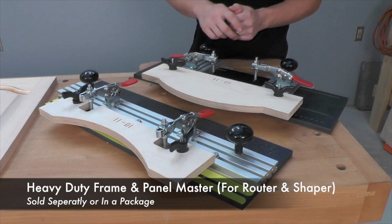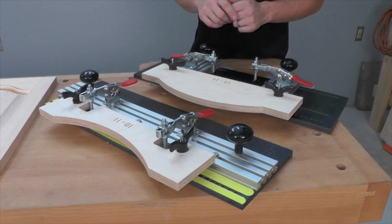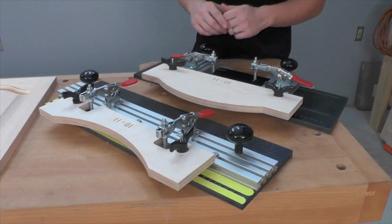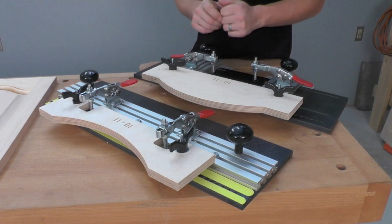This is the heavy duty frame and panel master and as you can see you get two different jigs with this setup: one for holding the rail specifically and one for holding the panel specifically so you don't have to switch back and forth with your jig. You can also have two people using this setup at the same time, which is great in a production environment. The jigs themselves are a heavy phenolic base with an extruded aluminum t-track system which makes making adjustments to these jigs very easy.